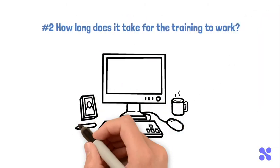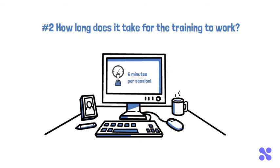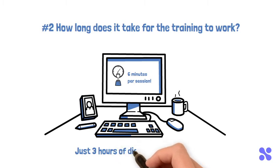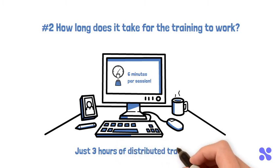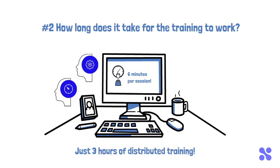Neurotracker is a unique training program where it only requires six minutes to complete a session. Research has consistently shown that with just three hours of distributed training, a wide range of benefits can be seen in visual processing speed and high-level cognitive abilities like attention, working memory, and decision-making.